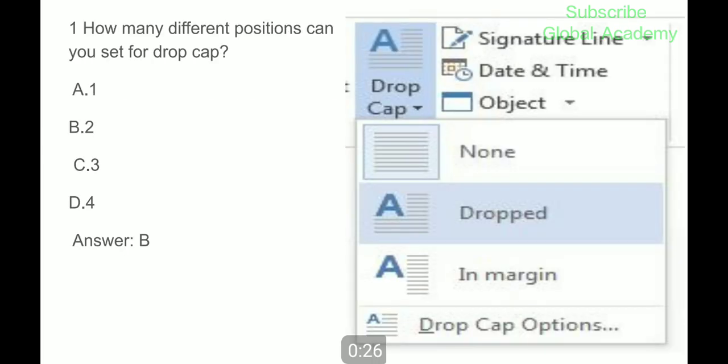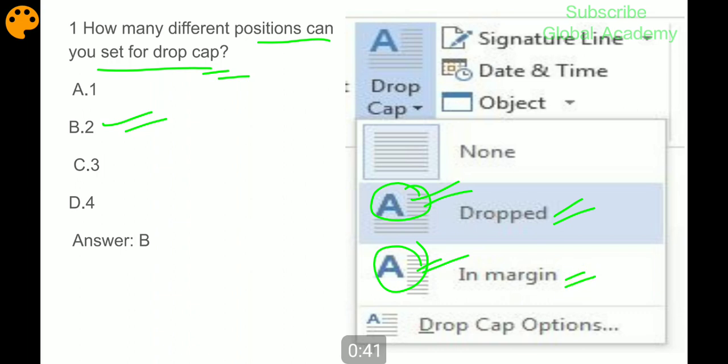First question: How many different positions can you set for a drop cap? Two positions - one drop and another margin. This is the first word we can write from which type. This is drop cap, this type you have seen in books.